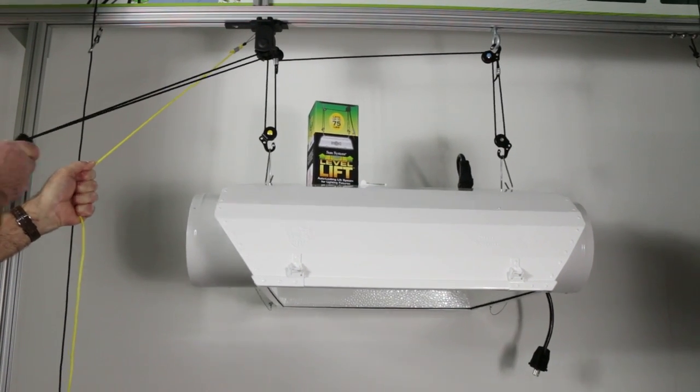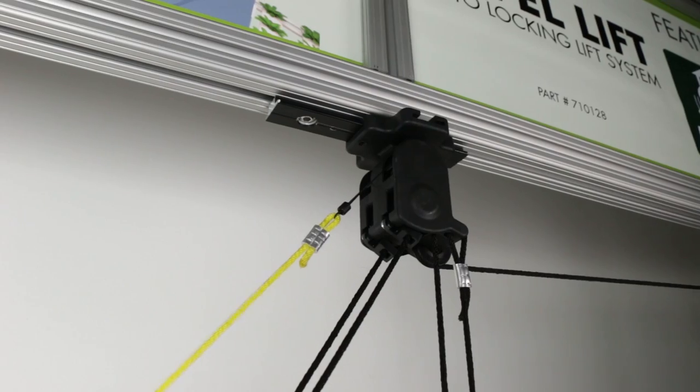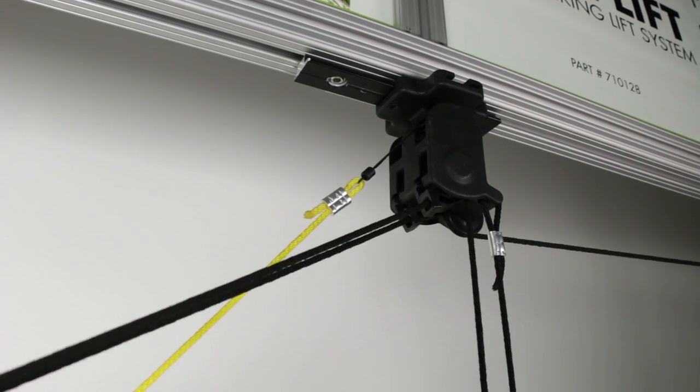To lower your light fixture, pull the yellow release line to engage the release mechanism. Then, simultaneously use the line handle to slightly pull the control line away from the LevelLift.